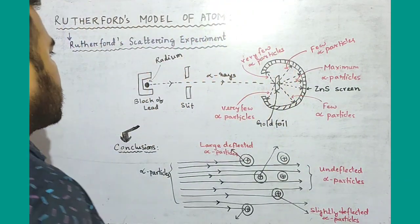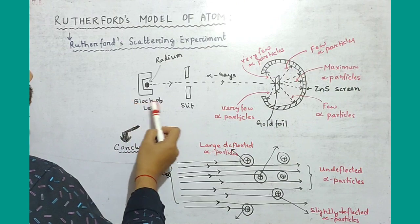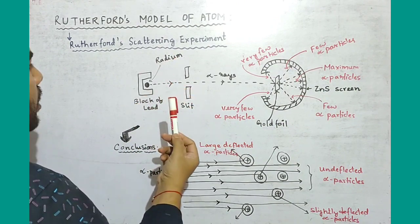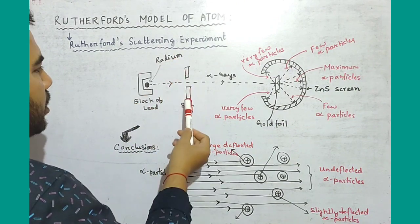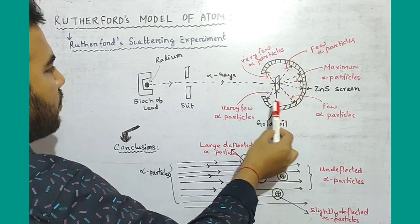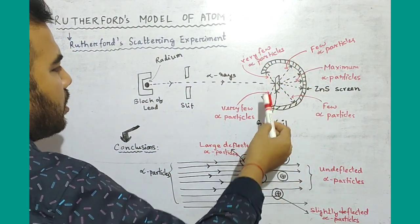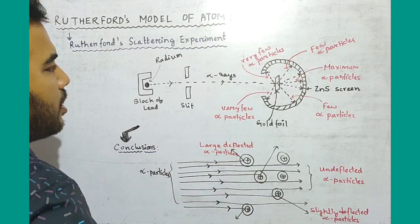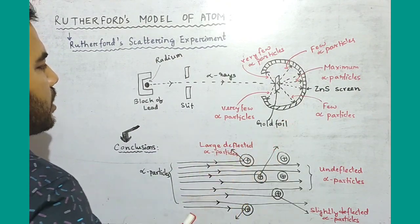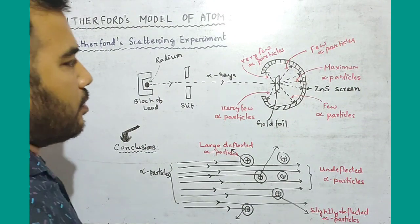The Scattering Experiment setup for Rutherford's Model of Atoms includes: a block of lead, a radioactive substance radium, a slit, a circular zinc sulphide screen, and metal foils — gold foils, silver foils, and copper foils.